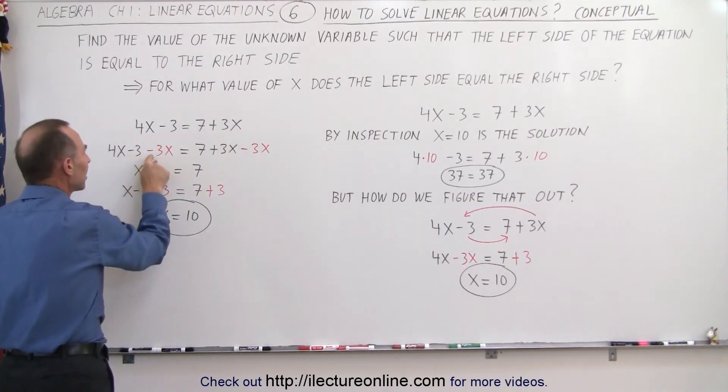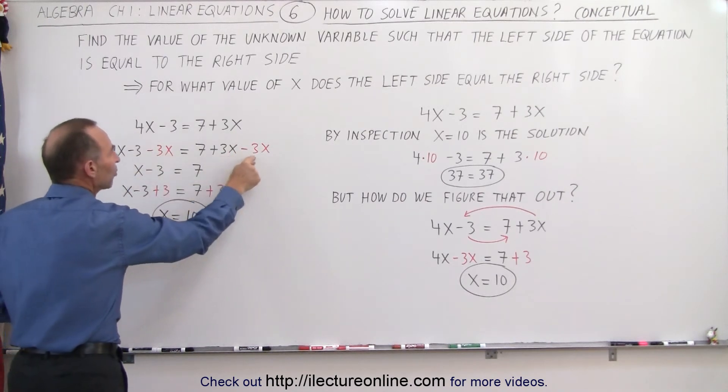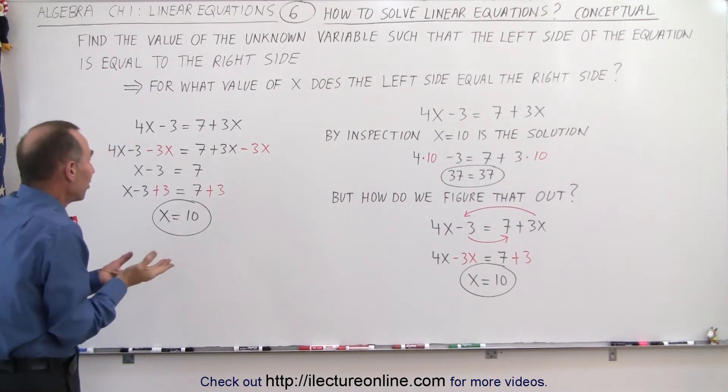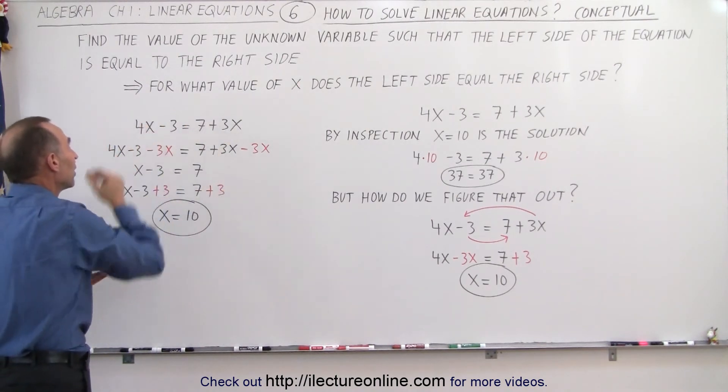So 4x minus 3x is x, and 3x minus 3x is 0. So we accomplish that by getting rid of the 3x on the right side. Essentially, it causes us to move it to the left side.